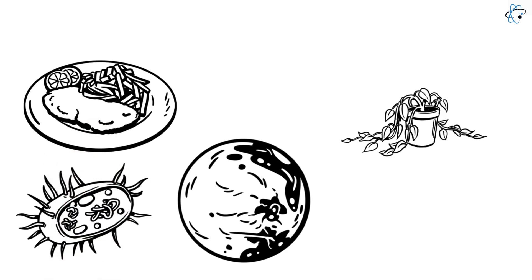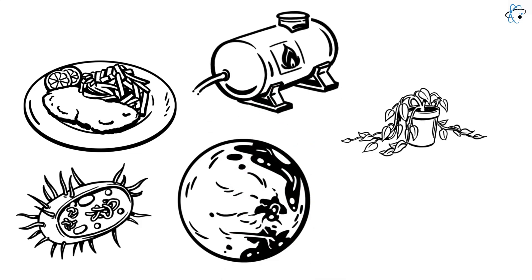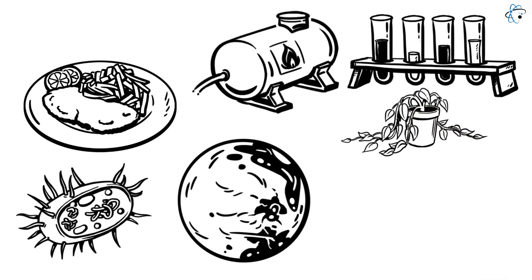Special archaea can produce methane, an ideal rocket fuel, from the available CO2 and hydrogen, which can be extracted from water. In closed photobioreactors and fermenters, these microbes can be cultivated specifically, and their metabolic products harvested continuously.